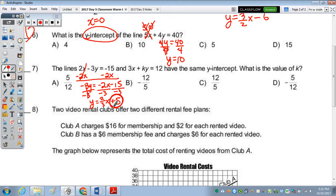So solving this equation for y, I'm going to rewrite it over here. 3x plus ky equals 12. Subtract 3x. We end up with k times y equals negative 3x plus 12.